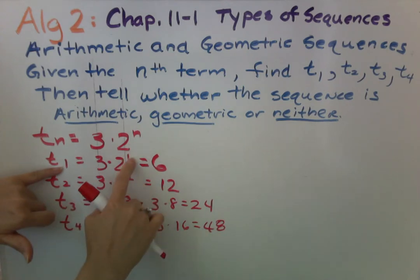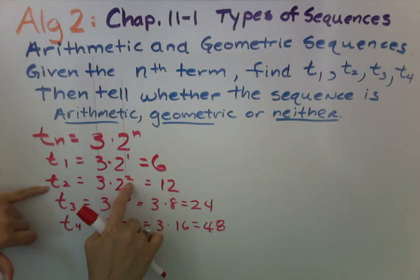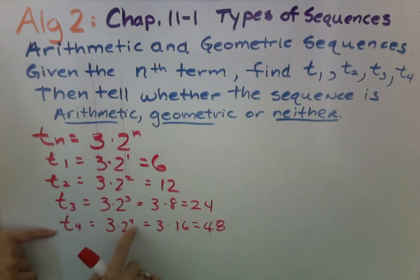For t1 we plug in one wherever the variable n is. For t2 we plugged in two, for t3 three, and for t4 four. They'll always give you some equation that you can plug in to find the different terms.